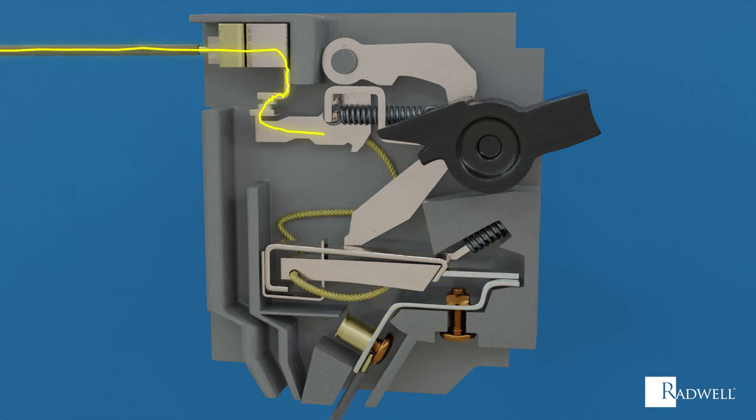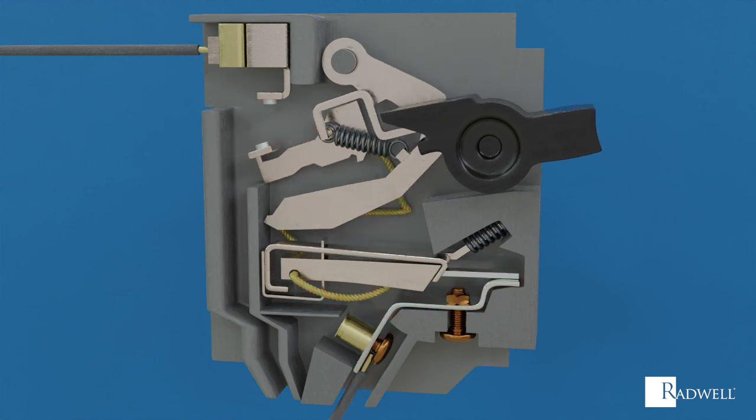When the current reaches an unsafe level, the electromagnet is strong enough to pull down the metal lever attached to the switch linkage. This flips the switch, which causes the moving contact to be separated from the stationary contact, thus breaking the circuit and the electricity shuts off. The arc extinguisher will cause the arc that is formed to dissipate quickly, protecting the circuit.